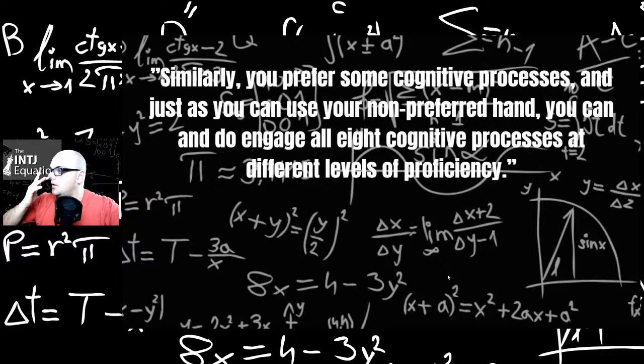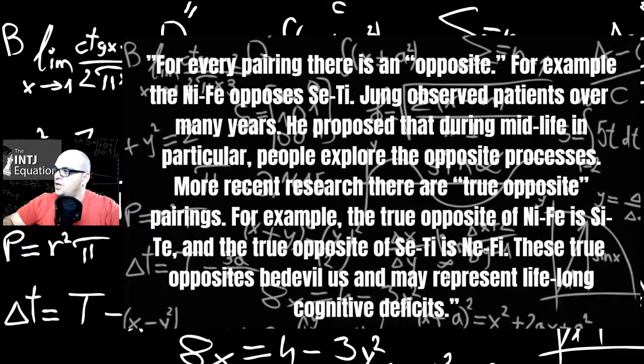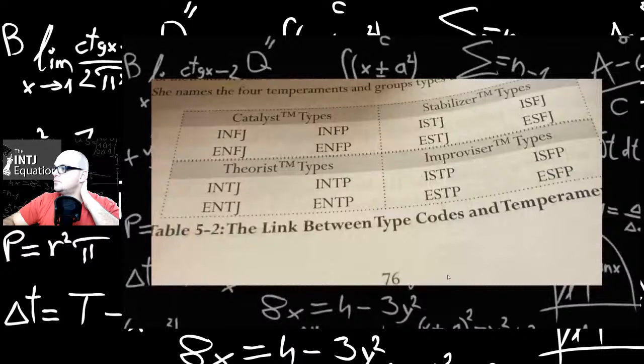Chapter five, going into personality types. Here's a quote from Nardi: Similarly, you prefer some cognitive processes and you can just use your non-preferred hand. Just as you use your non-preferred hand, you can engage all eight cognitive processes at a different level of proficiency. So for the skeptics of the eight function model, there you go. Another quote: For every parent, there is an opposite. For example, NiFe opposes SeTi. Young observed patients over many years. He proposed that during midlife in particular, people explore the opposite processes. More recent research, there are true opposite pairings. For example, the true opposite of NiFe is SiTe and the opposite is true for SeTi and NeFi. These true opposites may double us and may represent long life cognitive deficiencies.